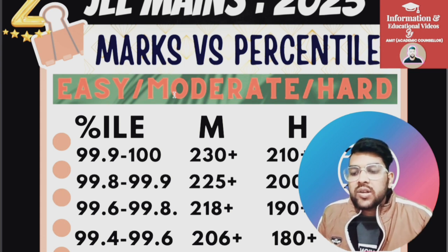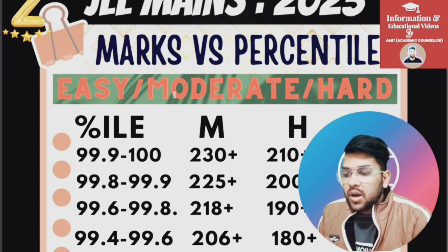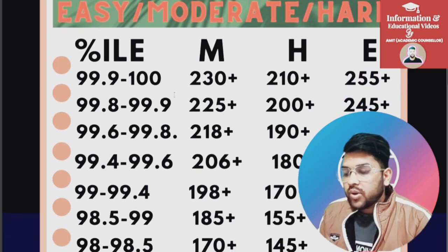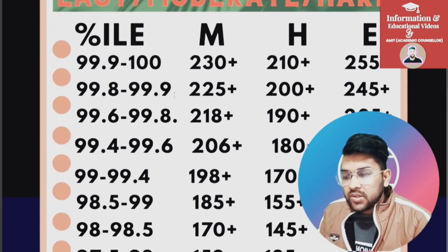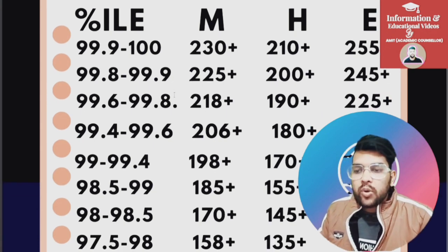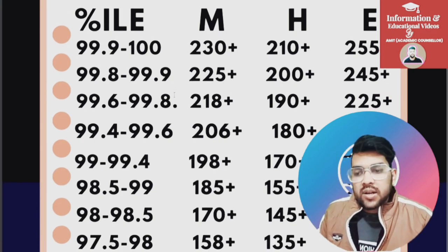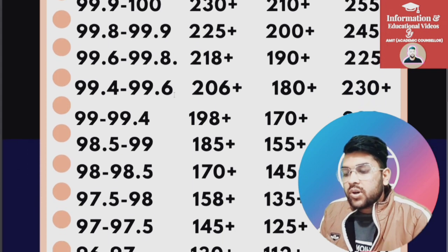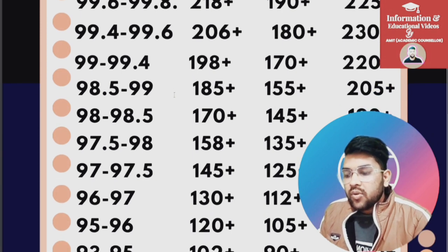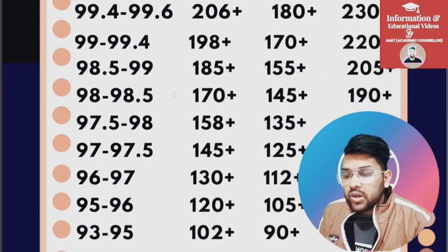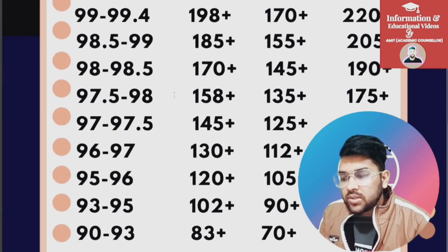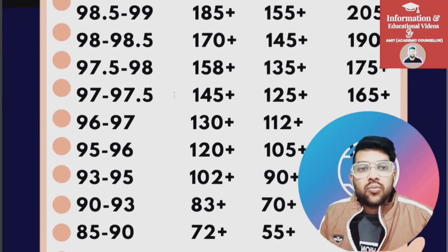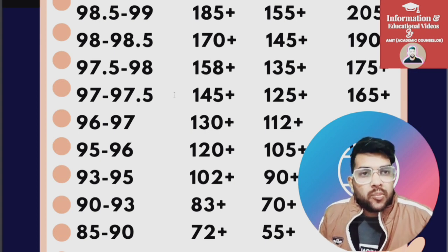From here I will discuss only the moderate paper — you can check the hard and easy paper figures displayed sideways on screen. For 99.4 percentile it is 206, for 99 it is 198, for 98.5 it is 185 plus, for 98 it is 170, for 97.5 it is 158, for 97 it is 145, for 96 it is 130 plus, for 95 it is 120 plus, for 93 it is 102 plus, for 90 it is 83 plus, and for 85 it is 72 plus.